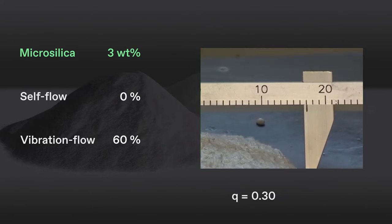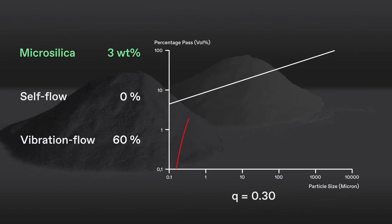A Q value of 0.3 results in no self-flow, but gives an acceptable vibra-flow value of 60%.